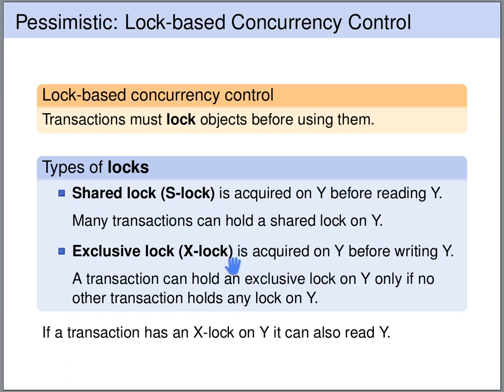An exclusive lock needs to be acquired on an object before writing it. As the name exclusive suggests, only one transaction can hold an exclusive lock on an object. If a transaction holds an exclusive lock, no other transaction can hold any lock on this object — neither other exclusive locks nor shared locks. An exclusive lock is stronger than a shared lock, so if a transaction has an exclusive lock, it can write the object and it can also read the object.